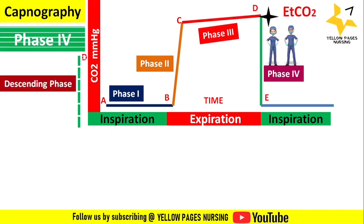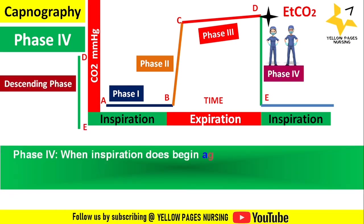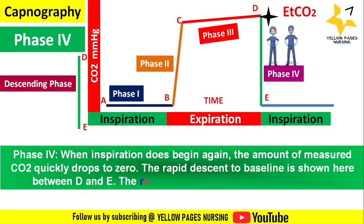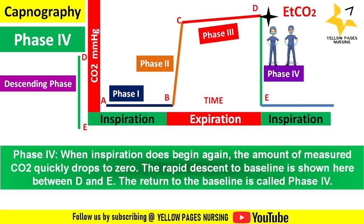When inspiration begins again, the amount of measured carbon dioxide quickly drops to zero. The rapid descent to baseline is shown between D and E and is called phase 4. This phase shows the beginning of the next inhalation, because oxygen fills the airway and the carbon dioxide level quickly drops to baseline.